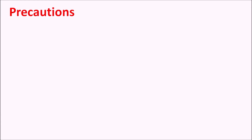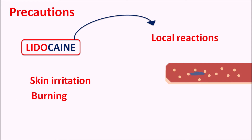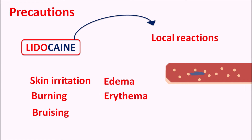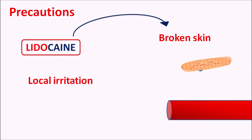What are the precautions? One important precaution is that lidocaine can produce local reactions. When applied on the skin or mucous membrane it can produce irritation, burning sensation, bruising, edema, and erythema. That's why this drug should be used at a low dose for topical purposes to minimize local reactions. Similarly, when applied to broken skin it can produce irritation, so lidocaine should be applied to intact skin only. On broken skin, lidocaine molecules can enter the systemic circulation through the broken skin, increasing systemic absorption and leading to systemic toxicity. Since this drug is intended for local action, it should not be applied on skin areas directly exposed to the circulatory system.